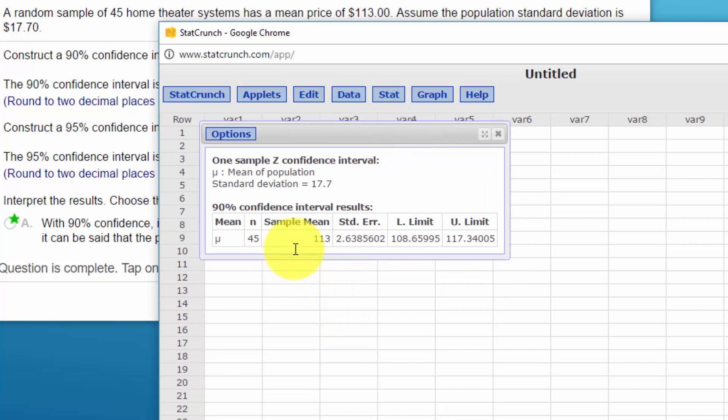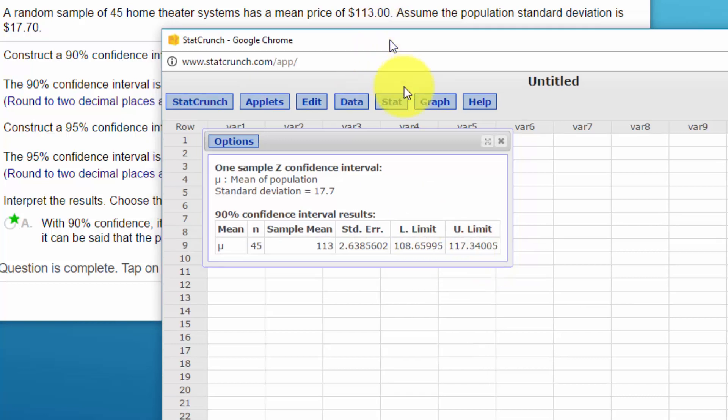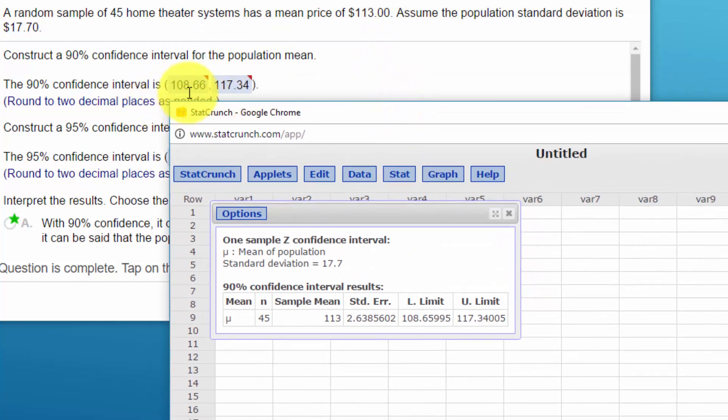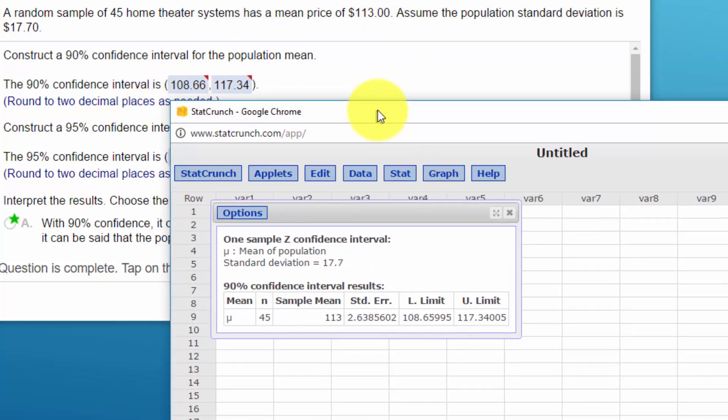And we get our answers there. We get our sample mean, the standard error, and the lower limit, and the upper limit. 108.66, 117.34. And let's see. Yes, that is the answers they got there rounded to two decimal places.